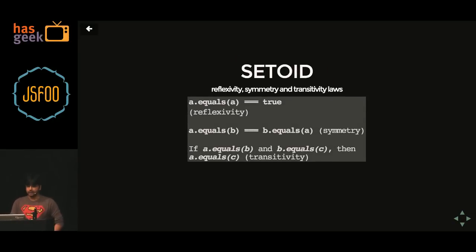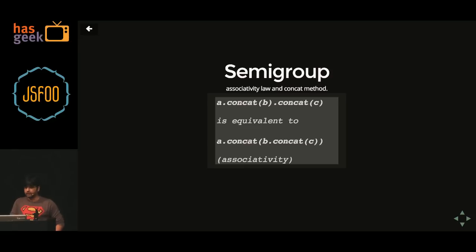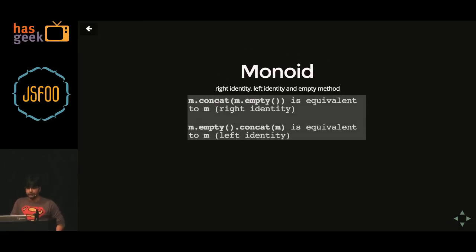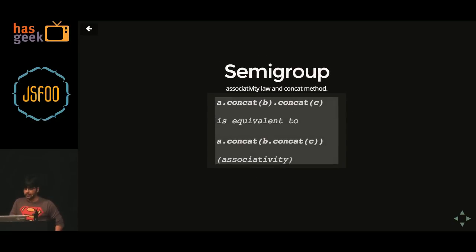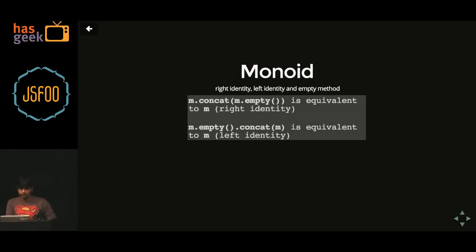There is the setoid — anything which is a setoid implements reflexive, symmetric, and transitive laws. A semi-group implements the associative law and has a concat method. There is something called a monoid, which implements right identity, left identity, and an empty method. a.concat(b).concat(c) is equivalent to a.concat(b.concat(c)) — that's the associativity I was talking about with milk and chocolate.